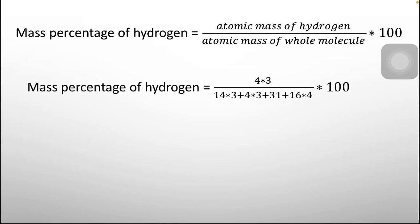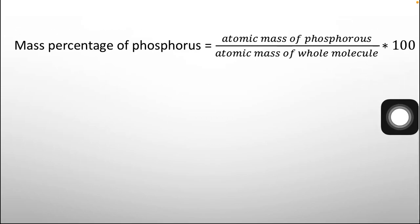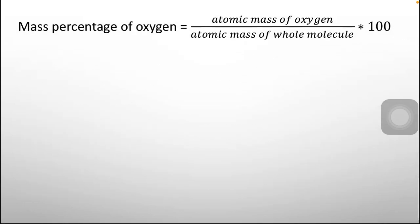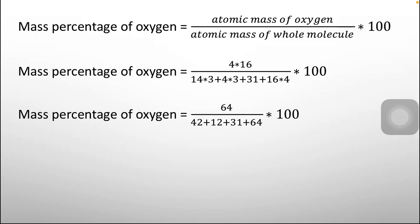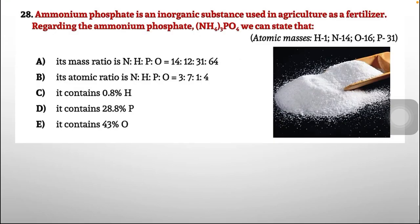Calculating the mass percentage of hydrogen: (number of H atoms × atomic mass of H) divided by molecular mass × 100 gives approximately 8% — so option C (0.8%) is incorrect. Phosphorus percentage gives approximately 21%, so option D is incorrect. For oxygen: 16 × 4 = 64, divided by 149 × 100 gives 43%. This matches option E. Therefore, the correct answer is option E — it contains 43% oxygen.